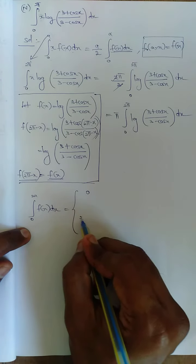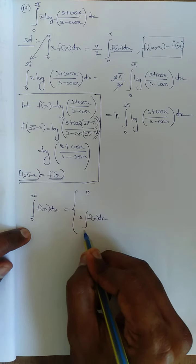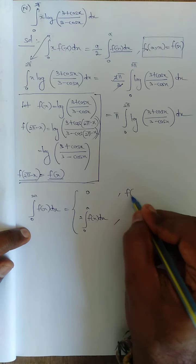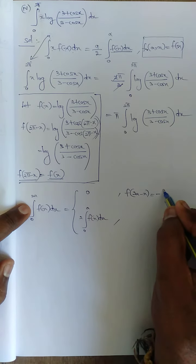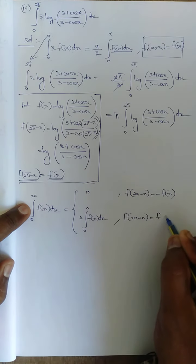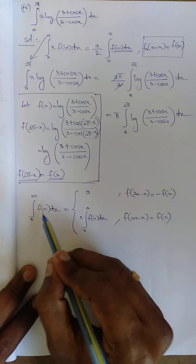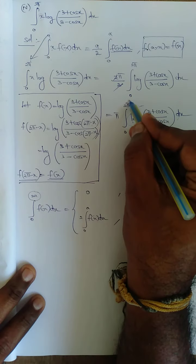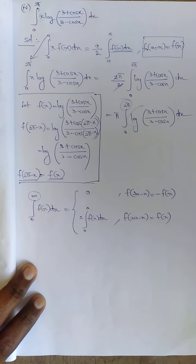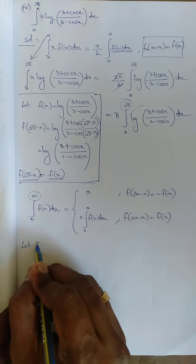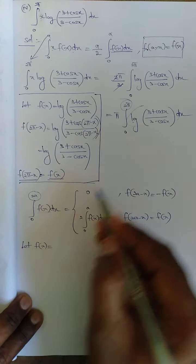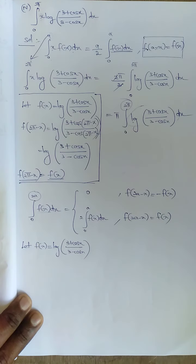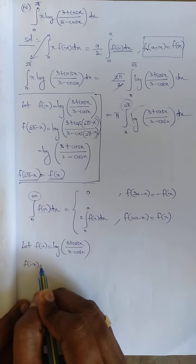The second property states: ∫₀²ᵃ f(x) dx = 0 if f(2a-x) = -f(x), and = 2·∫₀ᵃ f(x) dx if f(2a-x) = f(x). Here 2a = 2π, so a = π. Let f(x) = log[(3+cosx)/(3-cosx)] and apply f(2a-x) = f(2π-x).